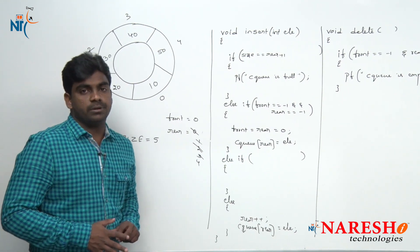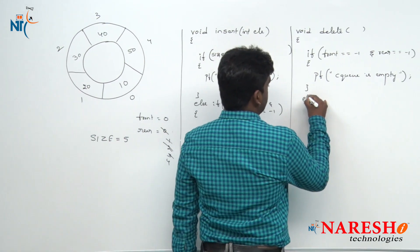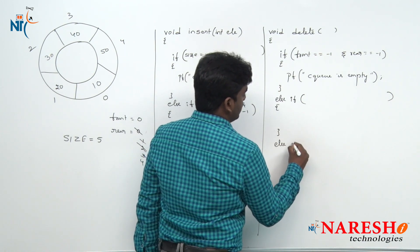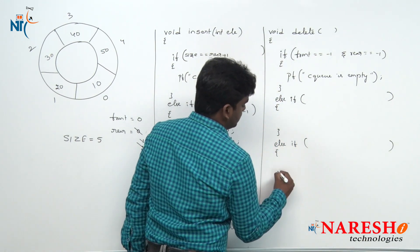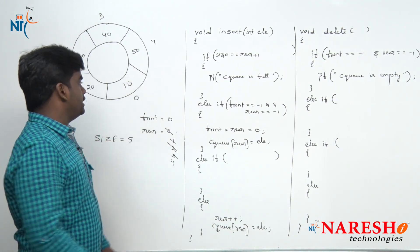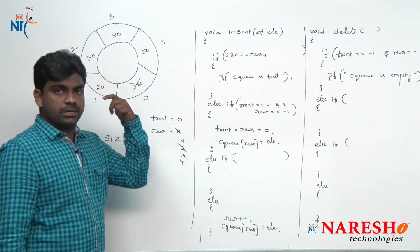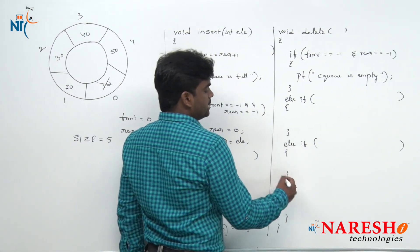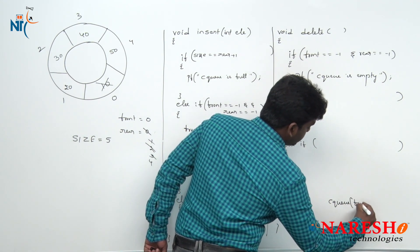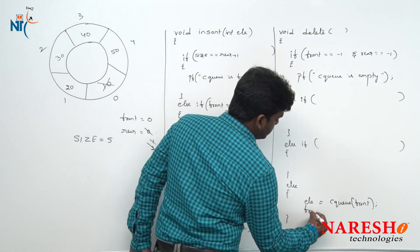Next we need to perform a deletion operation. How to perform deletion? We write else if blocks similar to insertion. In the last case, the element cqueue[front] — front value is 0 — we collect into a variable 'element', that is the deleted item. Then front plus plus. So cqueue[front] which is 10 is the deleted item, which we print using printf.